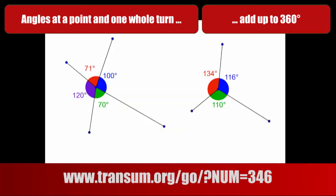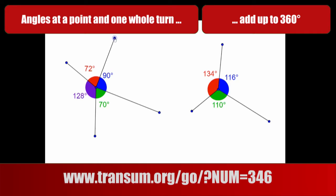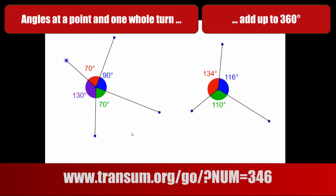Let's have a look at some numbers. We can see some angles around a point, and if I move the arms of these angles you can see that the size of the angles are changing instantly. The four angles always add up to 360 degrees, no matter where I put the arms. So 130 and 70 is 200, add 90 makes 290, add 70 makes 360.